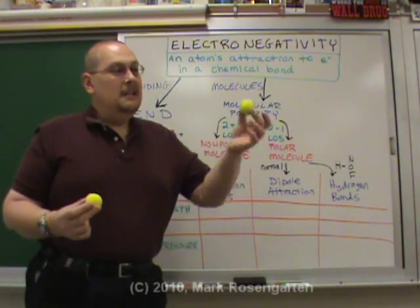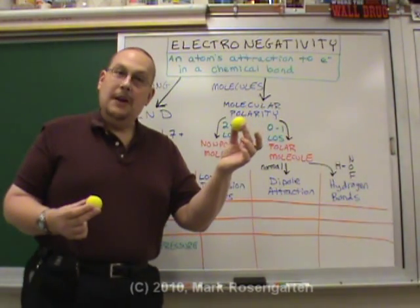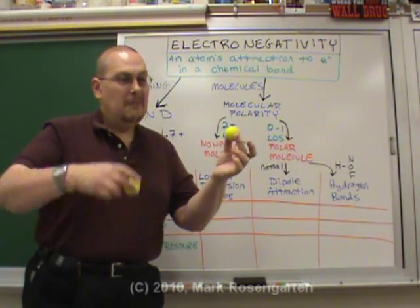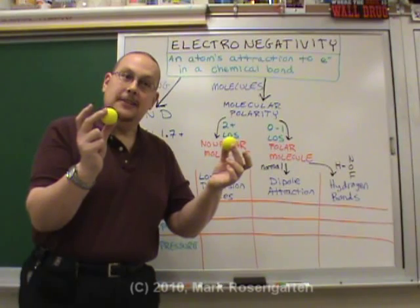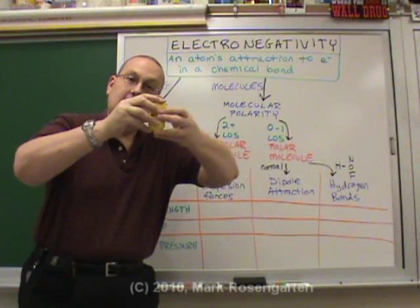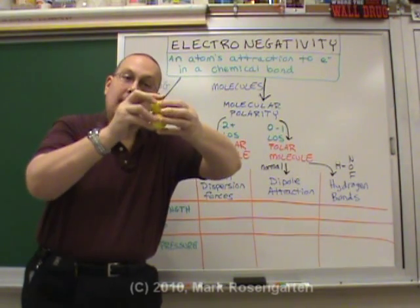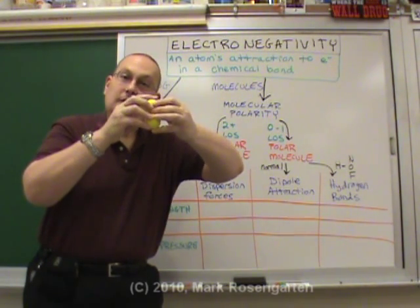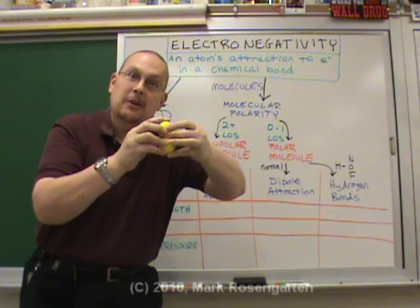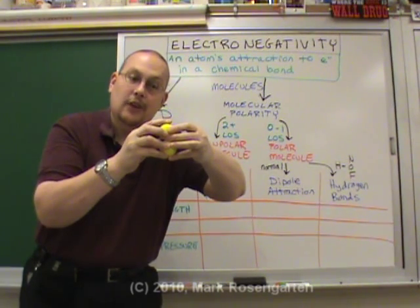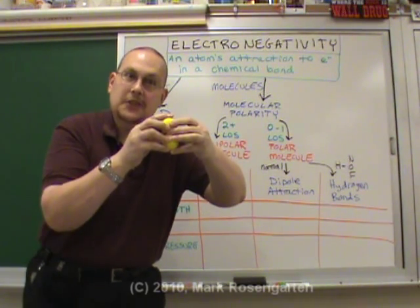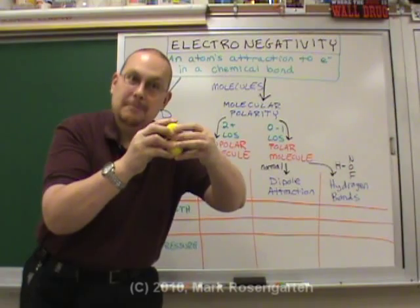In covalent bonding, one unpaired valence electron from one atom and an unpaired valence electron from another atom come together and pair up so that the two atoms share their unpaired valence electrons. That shared pair of electrons is called a covalent bond.